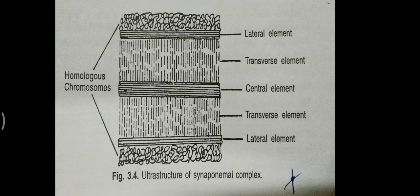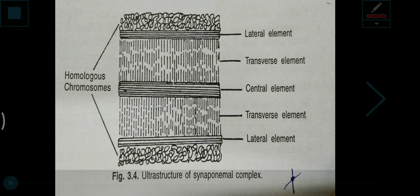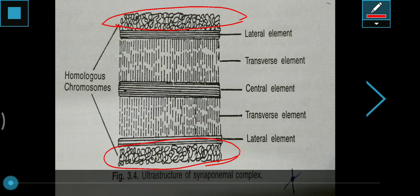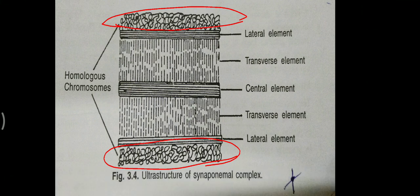This is about the ultrastructure of a synaptonemal complex. It is basically a protein framework which is found between paired chromosomes. Here we can see two pairs of chromosomes, and it consists of one central element and two lateral elements, as indicated here.